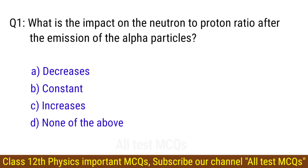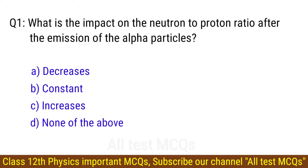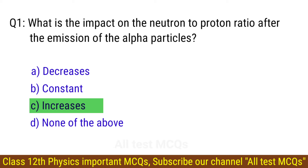Question number 1. What is the impact on the neutron to proton ratio after the emission of alpha particles? The right answer is option C: Increases.